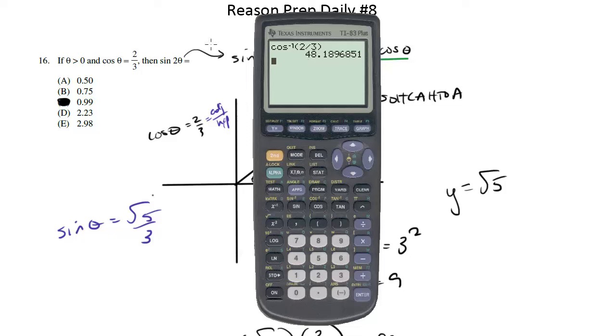Well, if theta is 48 degrees, let's just do the sine of two times 48 degrees. So the sine of two times the answer we got previously gets us the exact same answer, 0.99. That took us about five seconds.